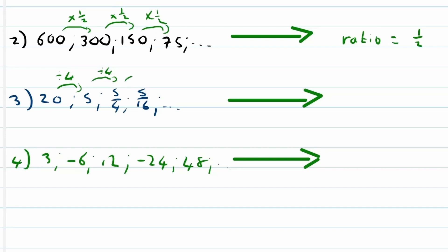And from 5 to 5 over 4, it is divided by 4. From 5 over 4 to 5 over 16 is also divided by 4. But we are writing this down as a ratio with multiplication, which means to multiply with a fourth or a quarter. It's the same as dividing by 4.